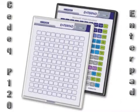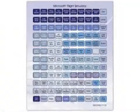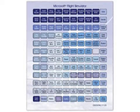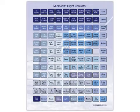Shown here are two enterpads. One in front is an enterpad right out of the box. The second is configured to work with flight simulator. This is a different flight simulator configuration. Keys are labeled, color coded and grouped together according to their function, making finding a specific key quick and easy.